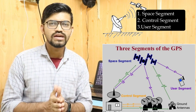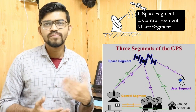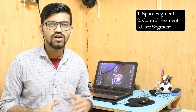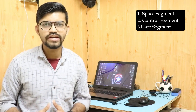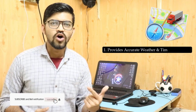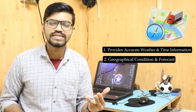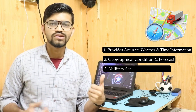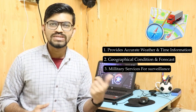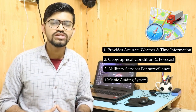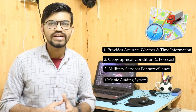The user segment includes people like you and me who have GPS receivers to receive signals from the satellites. The data received is the filtered data approved by the master control station. Users in this segment include the military, as well as third-party apps like Google Maps. Applications include weather forecasting, geographic conditions monitoring, military surveillance, and missile guidance systems.